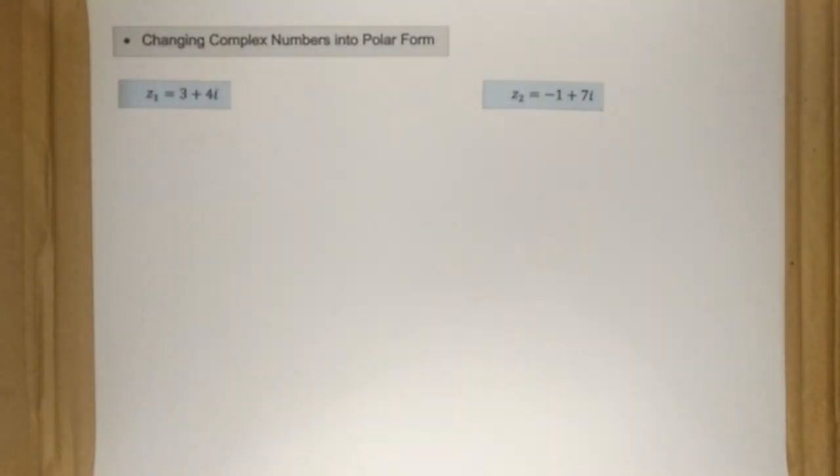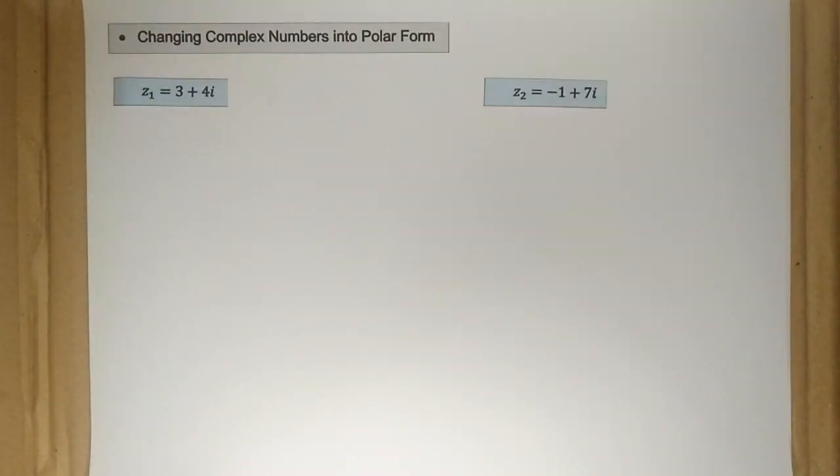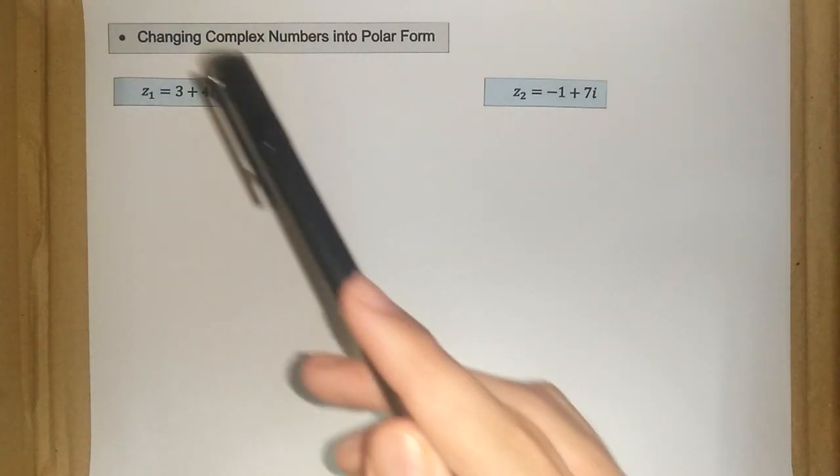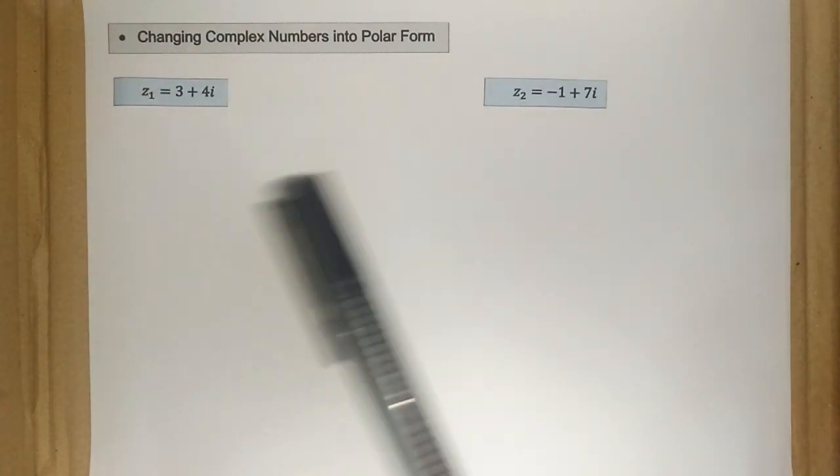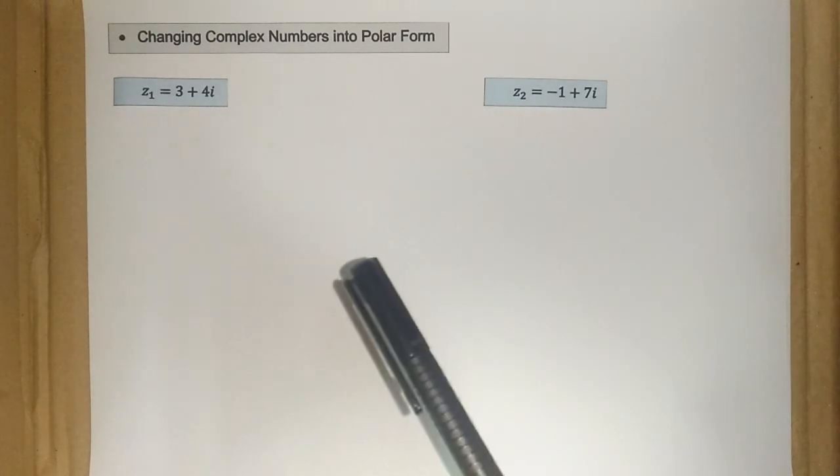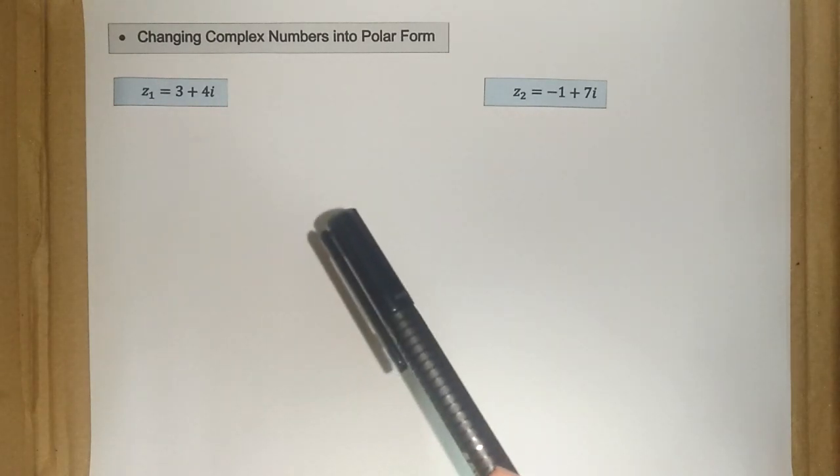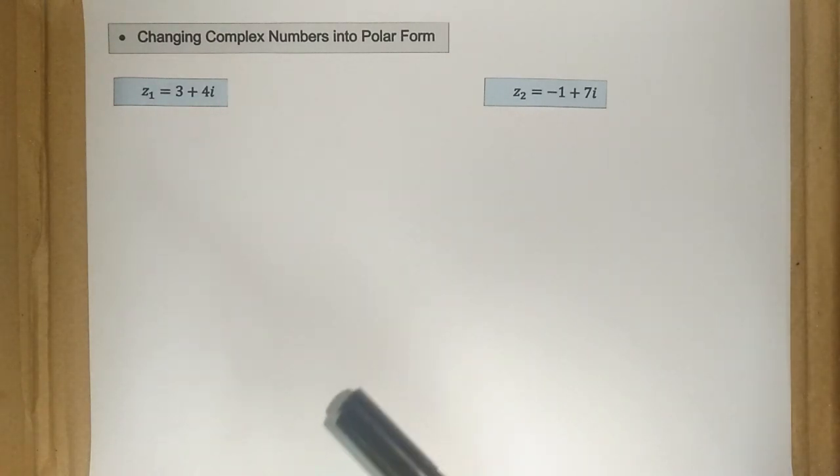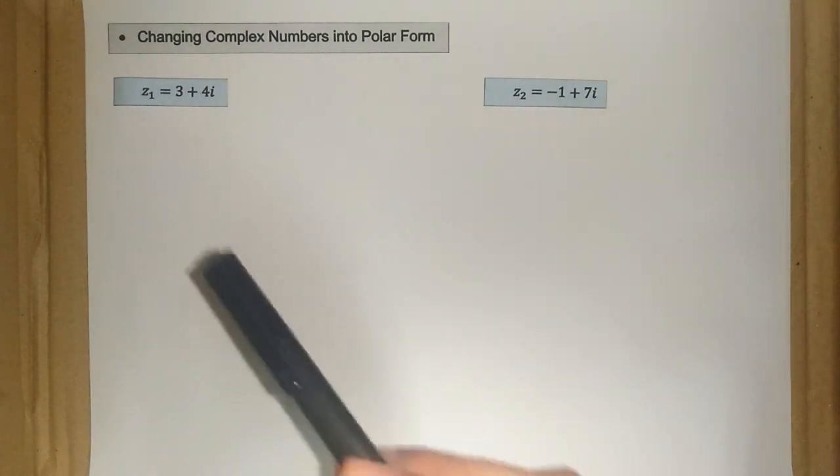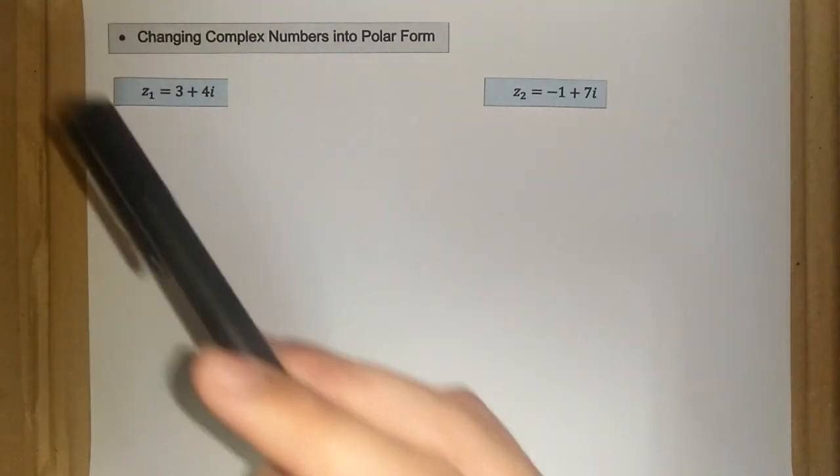Hello and hi everyone. Let's look at this example here. We have our complex number here in Cartesian form and we want to change them into polar form or modulus argument form. So let's look at our first example here.